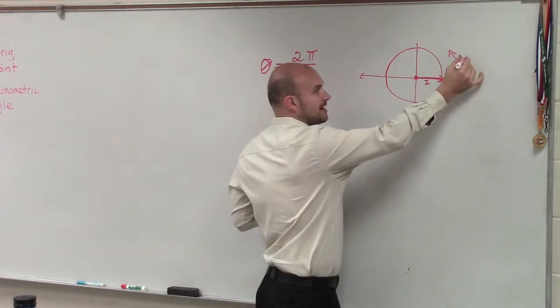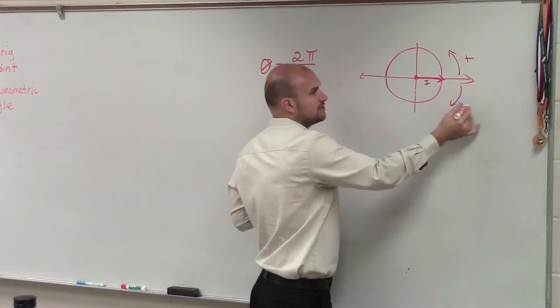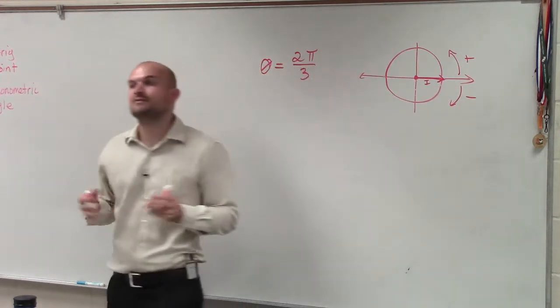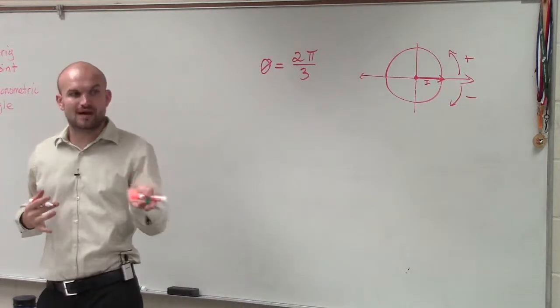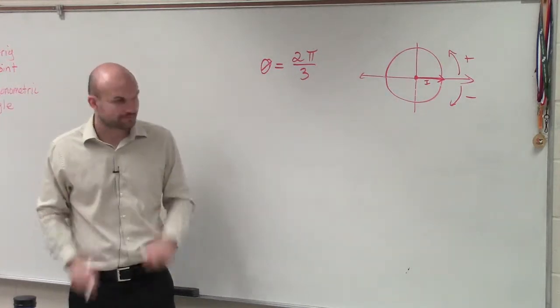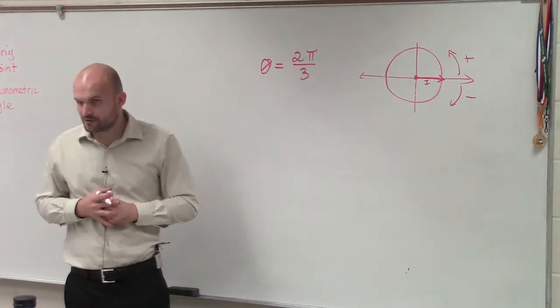If we rotate it counterclockwise, that's positive. And if we rotate it clockwise, that's negative, meaning this direction is positive, this direction is negative. So we need to do 2 pi over 3.